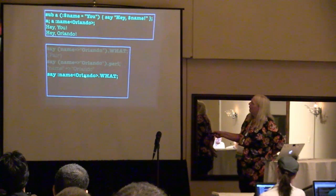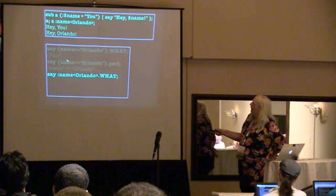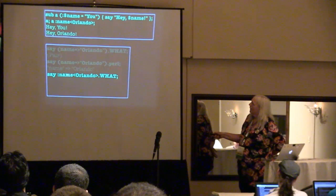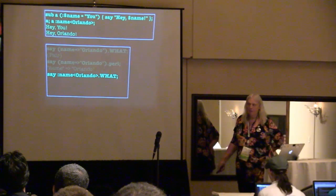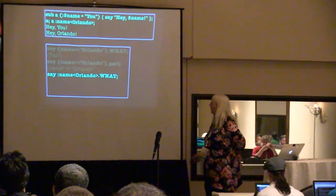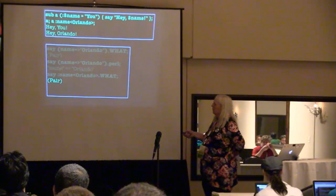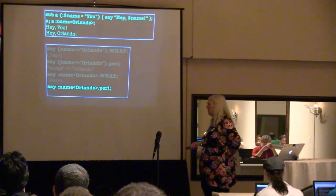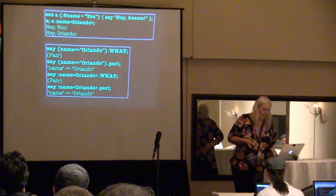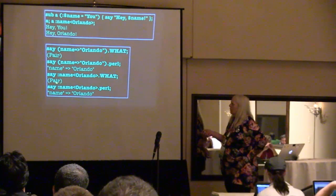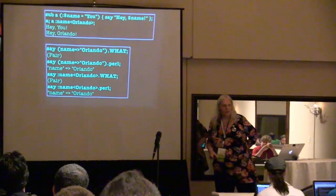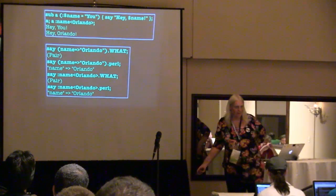Well, that's actually just a pair. You know the fat comma in Perl 5 — if you do that in Perl 6 and ask what it is, it's actually a pair. If you have a plural representation of it, again fat comma. This is just another way of saying colon, key, angle-bracket string. Very easy, few characters to type. For a lot of Perl 5 people this looks very strange, but it's just a pair, nothing else.